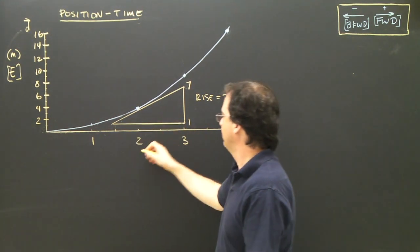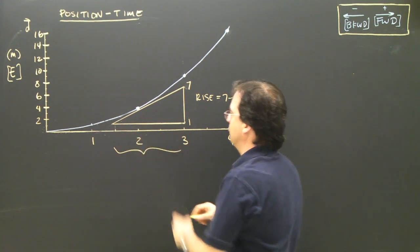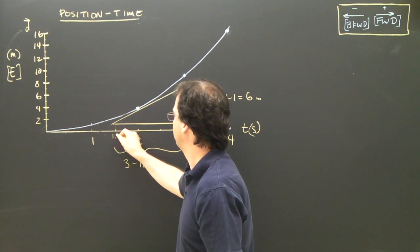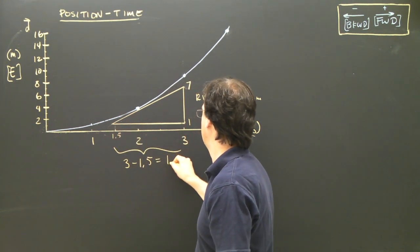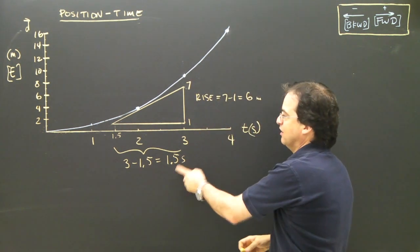What about my run? My run here is 3 minus 1.5. This is 1.5. So that is equal to 1.5 seconds. So I have my rise. I have my run.